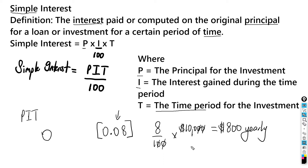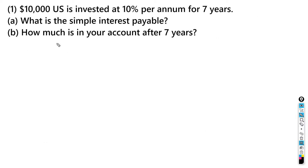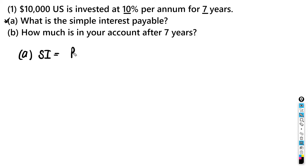Now for the first example: $10,000 US is invested at 10% per annum for seven years. What is the simple interest payable, and how much is in your account after seven years? For part A, we calculate the simple interest using SI = PIT over 100.